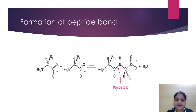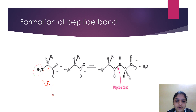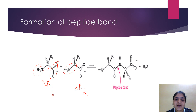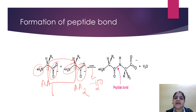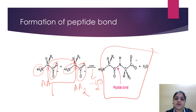Looking at the formation of a peptide bond: amino acid 1 has an alpha carbon to which an amino group and a carboxyl group are attached. Amino acid 2 also has an amino group and a carboxyl group. When these two combine, the carboxyl group of one amino acid reacts with the amino group of the other with removal of one water molecule, forming a peptide bond — the C-O-N-H linkage.